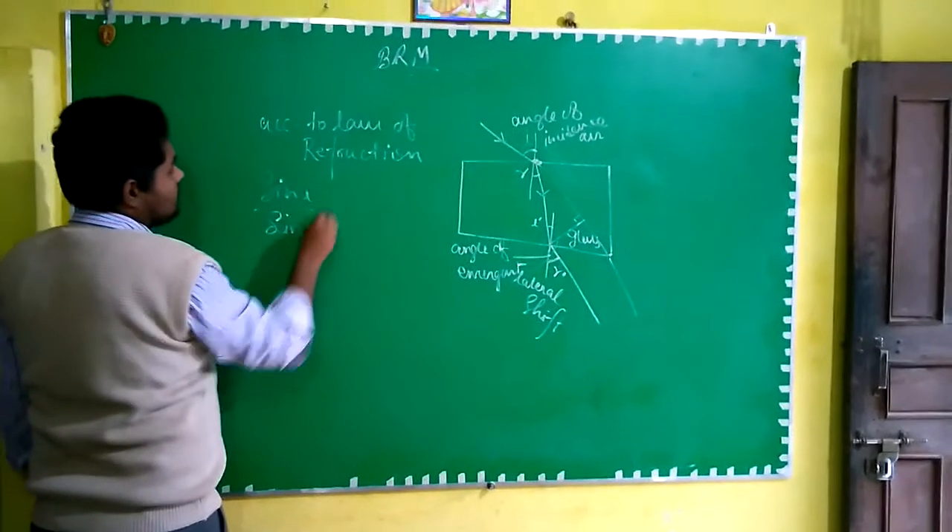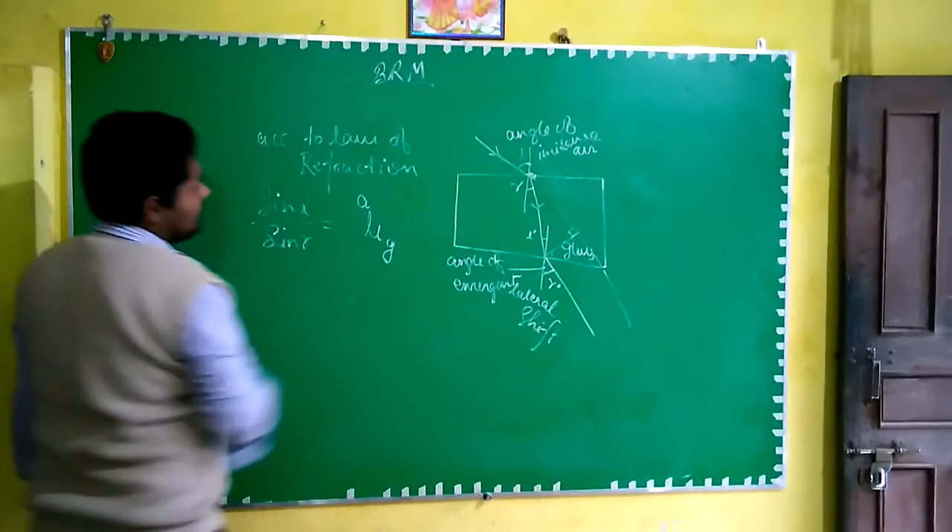So if we will apply here the angle of reflection, according to the law of reflection, sine I upon sine R is equal to what? Is equal to the refractive index of glass with respect to air. Is that clear?